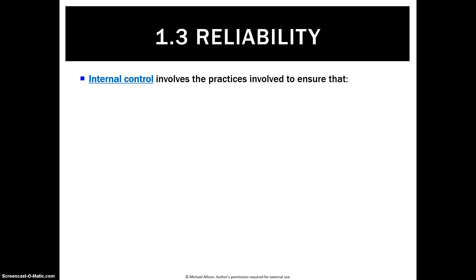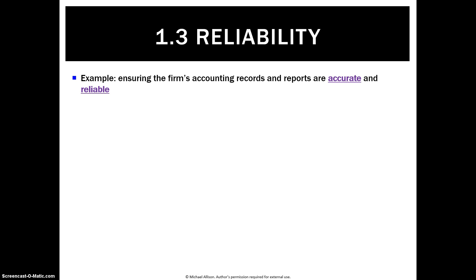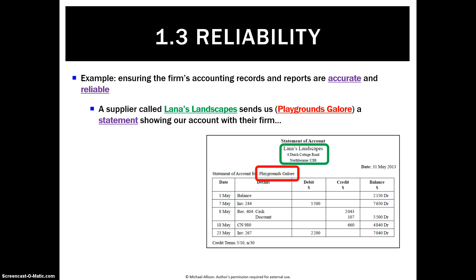Related to the concept of reliability is a notion of internal control. Internal control involves the practices involved to ensure that your accounting records and reports are accurate and reliable, and the firm's assets are protected from theft, fraud and misrepresentation. To use an example, one way we can ensure the firm's accounting reports are accurate and reliable is: let's say we are Playgrounds Galore and we get a statement from Lana's Landscapes that shows our balance.